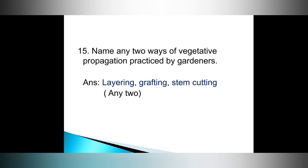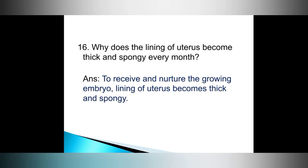Question number fifteen: name any two ways of vegetative propagation practiced by gardeners. Question number sixteen: why does the lining of the uterus become thick and spongy every month? Answer: to receive and nurture the growing embryo, the lining of the uterus becomes thick and spongy.